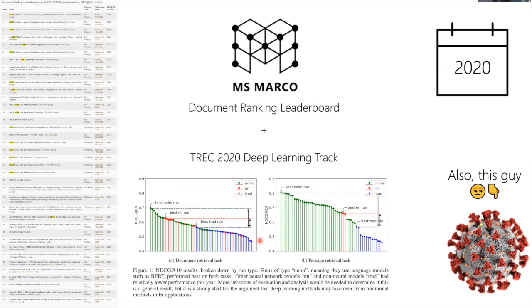One thing I'm less happy about is that the NN models — non-NNLM neural models — are actually shrinking. In 2020 there were just two groups that submitted NN runs for the document ranking task, and one of those happened to be us. On the leaderboard, the top runs seem to all be BERT or BERT-style models. In fact, we're getting to a point where people don't even mention BERT anymore because it has become such an obvious part of the recipe.